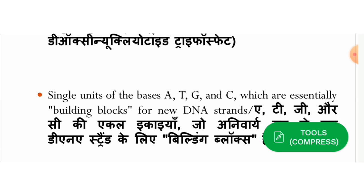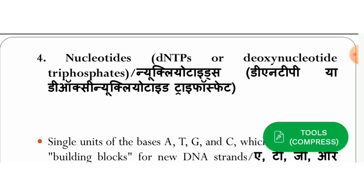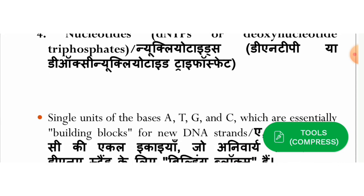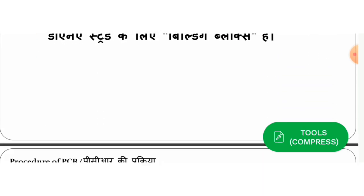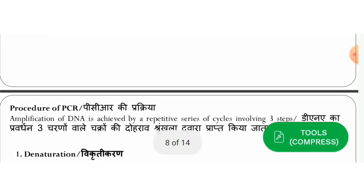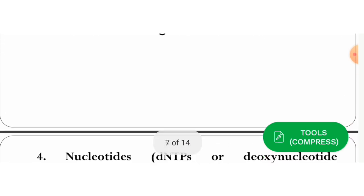What is the nucleotide basis? Adenine, thymine, guanine, and cytosine — A, T, G, C. These are the single units of bases and are actually the building blocks for the new DNA strand. This is the most essential component — it is the monomer. So these are the four components.